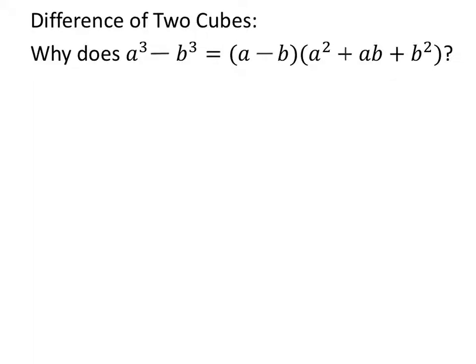Hey you guys, this is Mr. Sal. We're going to look at the difference of two cubes, and we're going to see why a cubed minus b cubed equals quantity a minus b times the quantity a squared plus ab plus b squared.